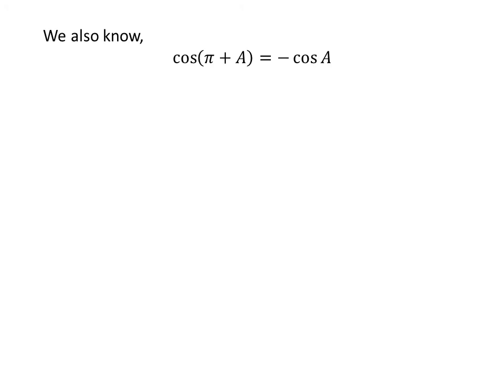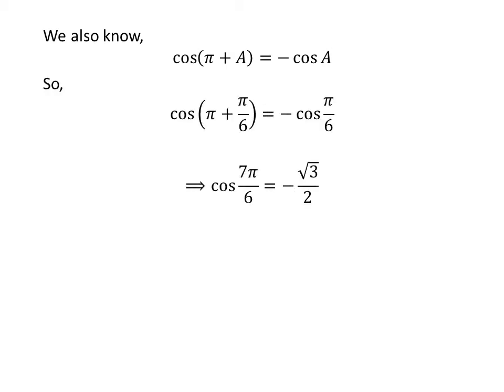We also know the famous trigonometry identity: cosine of pi plus a is equal to minus cosine of a. The proof is given in the video in the upper right corner and the link is in the description. Applying this identity as before, we get cosine of 7 times pi upon 6 is equal to minus square root of 3 upon 2.